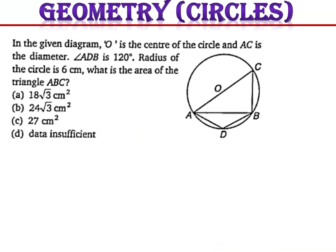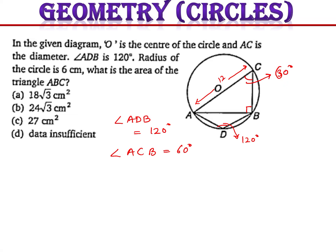Next question: in the given diagram, O is the center of the circle and AC is the diameter, with length 12 (radius 6). Angle ADB is 120 degrees and we need to find the area of triangle ABC. Angle CAB is 90 degrees because it is the angle in a semicircle. Since ADBC is a cyclic quadrilateral, angle ACB equals 60 degrees, and by angle sum property, angle BAC equals 30 degrees.